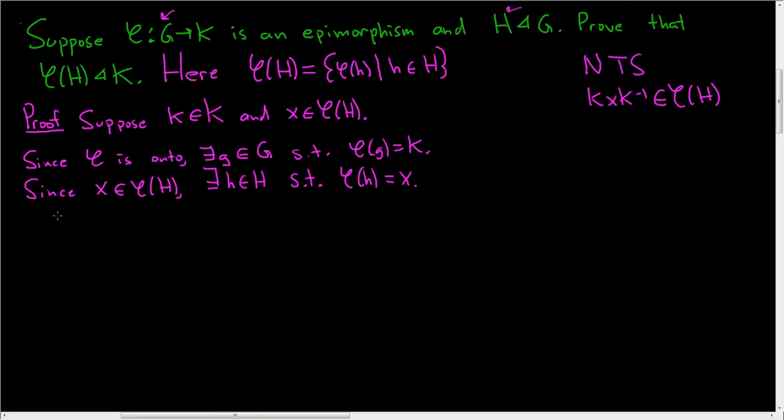So now we'll just look at k·x·k⁻¹ and see what happens. So then, k·x·k⁻¹, this is equal to, well, φ(g), φ(h), and then φ(g⁻¹). That's k⁻¹. And φ is a group homomorphism. So this is φ(g·h·g⁻¹).